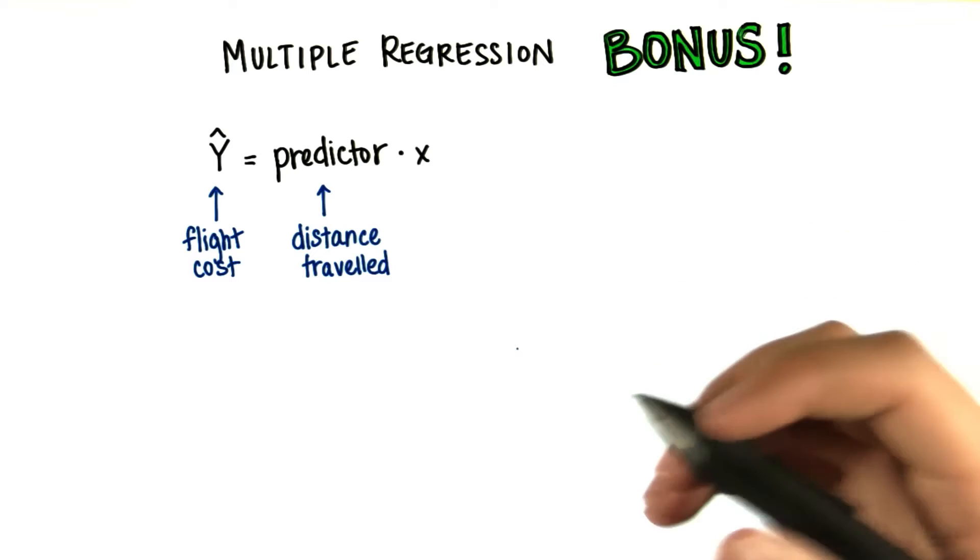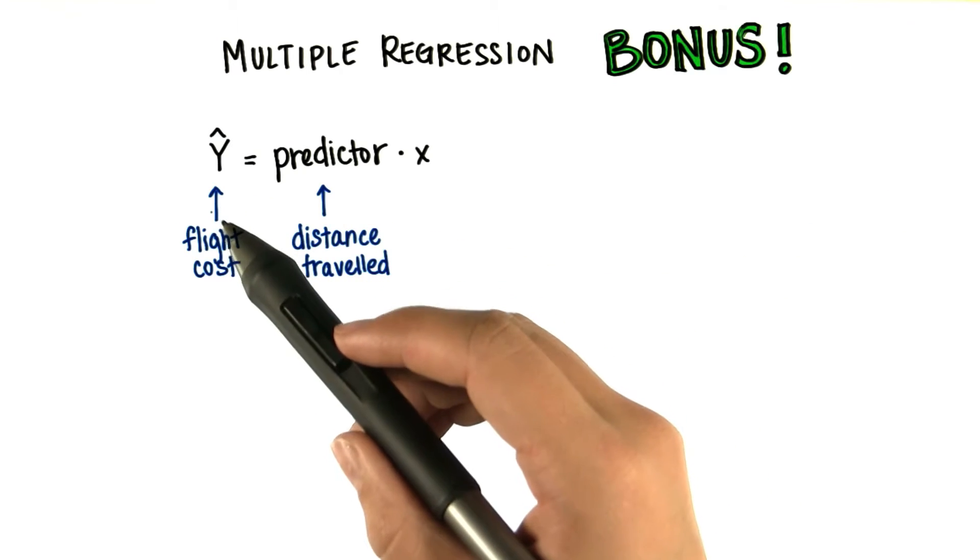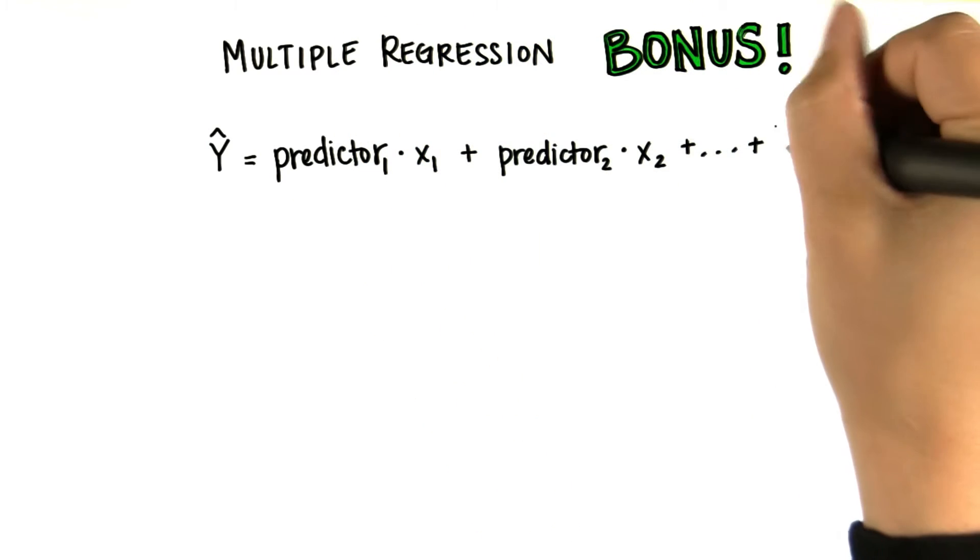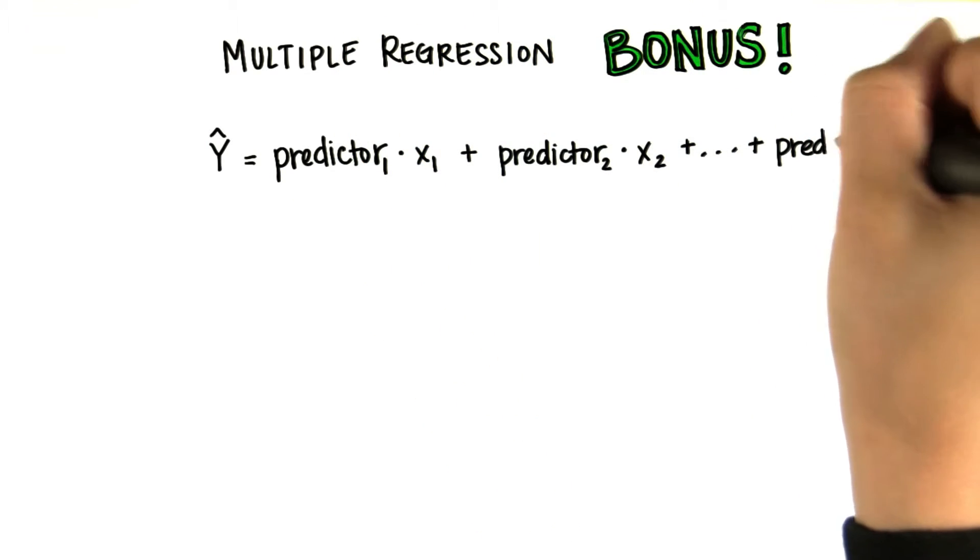The purpose is to explain more of the variation in y. Basically, we regress y on predictor 1, predictor 2, all the way to however many predictors we want.